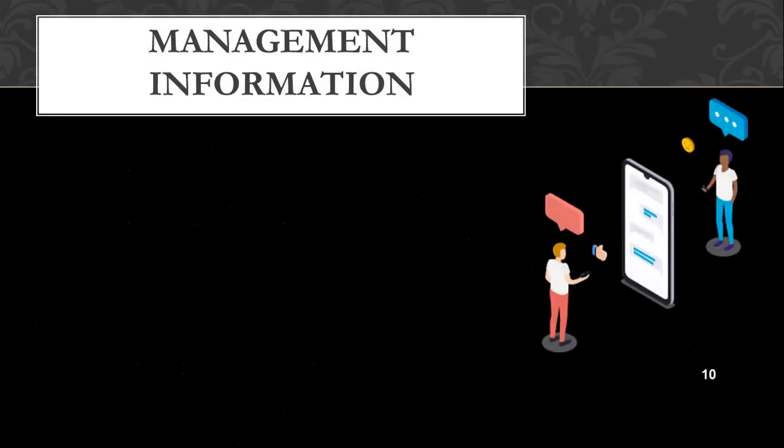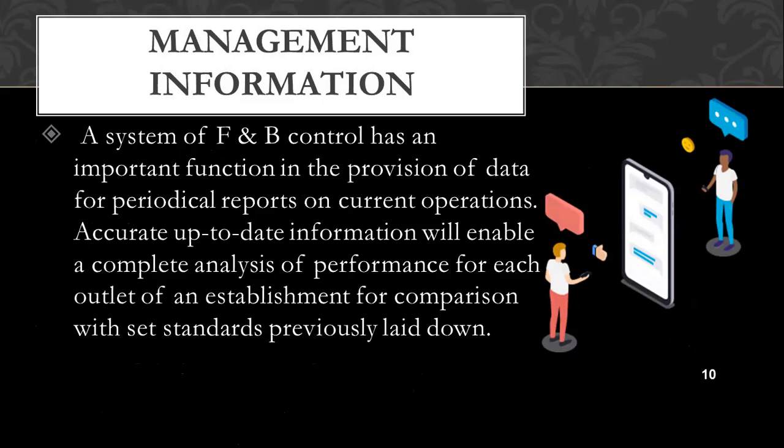Management information: a system of food and beverage control has an important function in providing data for periodical reports on current operations. Accurate, up-to-date information will ensure a complete analysis of performance for each outlet of an establishment for comparison with set standards. What is happening here is you have SOPs in place already, and when you are doing control simultaneously, these various factors are going to help you generate reports to understand where you stand when comparing the standards laid down against the actual operation.